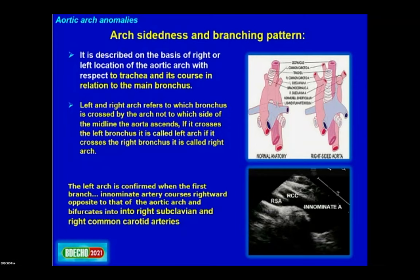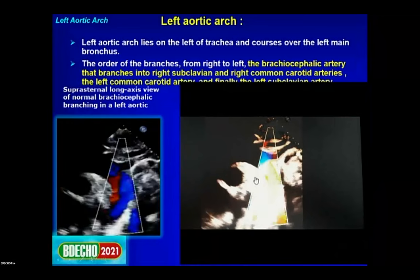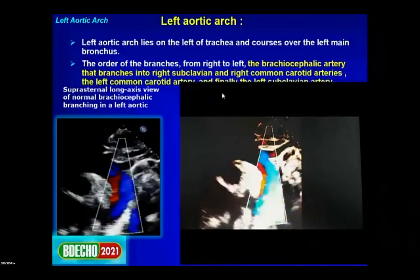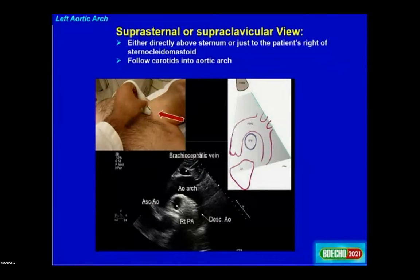If the arch crosses the left bronchus it is called the left arch; if it crosses the right bronchus it is called the right arch. In the suprasternal view, for a left aortic arch the first division — the innominate — goes to the right side and divides into right subclavian and right common carotid artery. Suprasternal echo shows branching from right to left: brachiocephalic artery, then left common carotid and left subclavian.